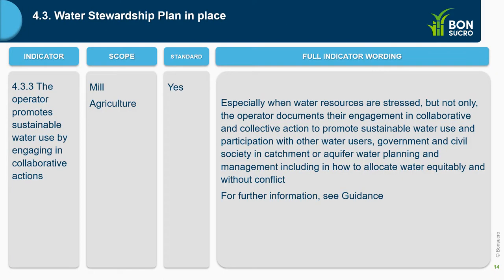Indicator 4.3.3: the operator promotes sustainable water use by engaging in collaborative actions. This is a minor indicator. Especially when there is water stress — but not only — it must be clear that the operator is engaged in collaborative and collective actions to promote sustainable water use, and that the company participates with other water users, government, and civil society in catchment or aquifer water planning and management, including how to allocate water equitably and without conflict. This indicator is closely related to the mapping and to the water stewardship plan.